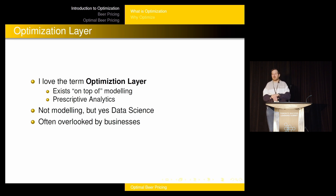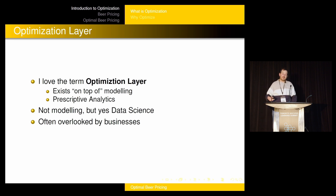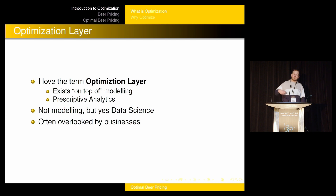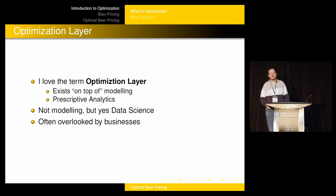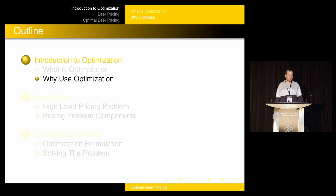I'll probably talk about an optimization layer sitting on top of your model. I want you to use the term 'optimization layer,' not 'optimization model' — modeling is something else; this sits on top of modeling. It is part of data science, though — it's a key part of data science, and a key part that's often overlooked by businesses.